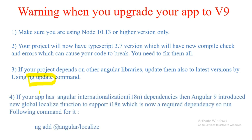The final warning is that if your app has Angular internal internationalization — that is i18n — dependencies, and you depend on Angular to provide that internationalization, then Angular 9 has introduced new globalized functions that actually support i18n. This is now a required dependency and you have to run the following command so that internationalization support continues to be provided in your Angular app: ng add @angular/localize. If you have a few more issues, please tell me in the comment section and I will be happy to help.